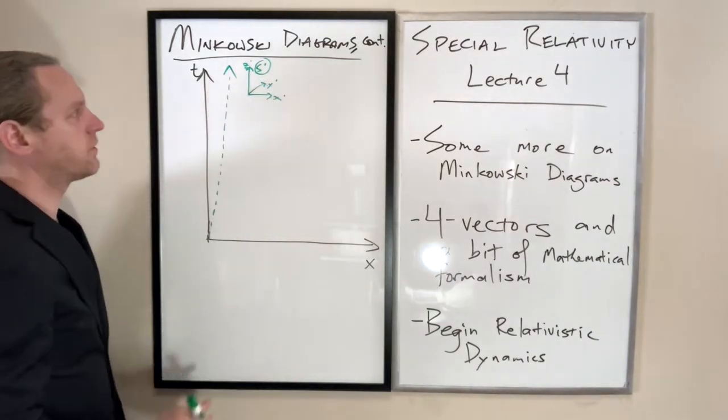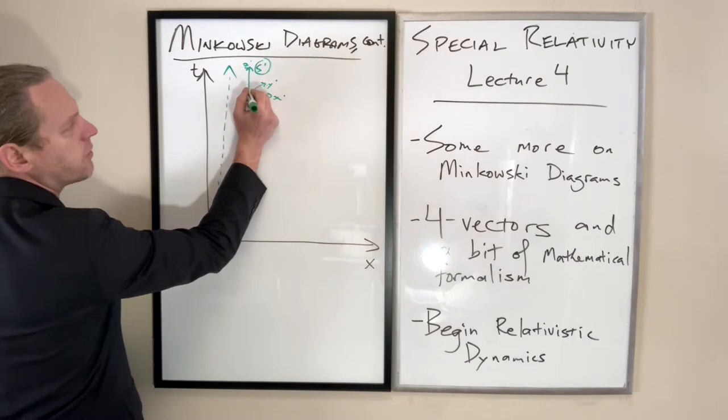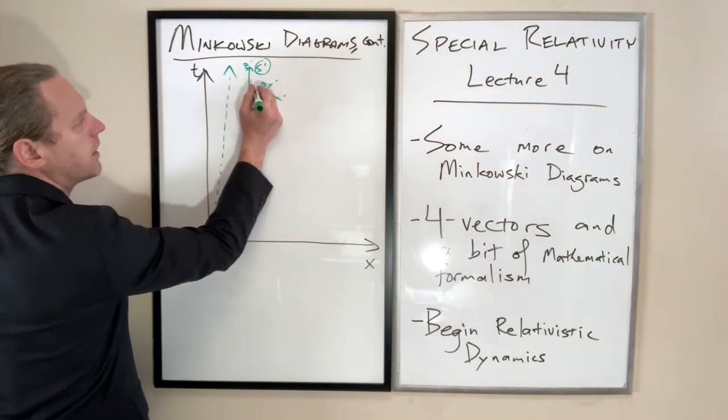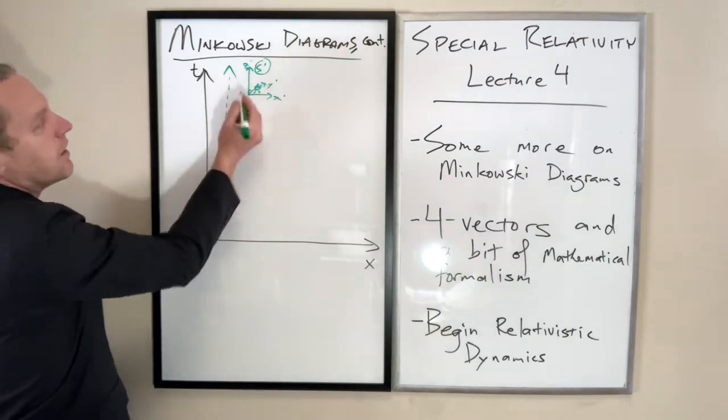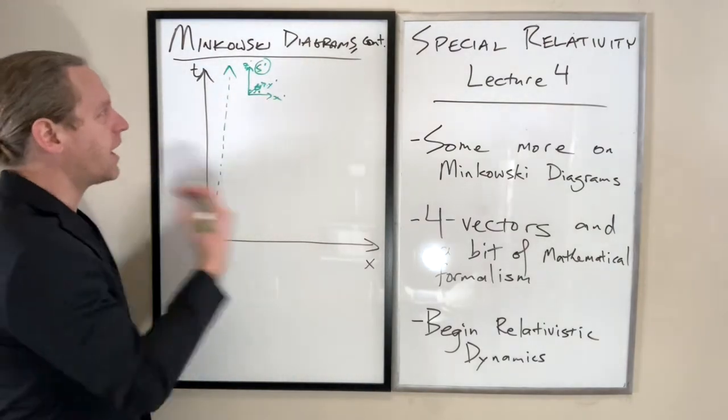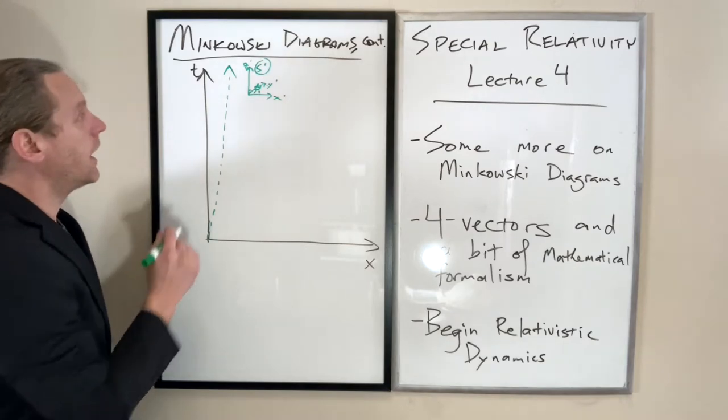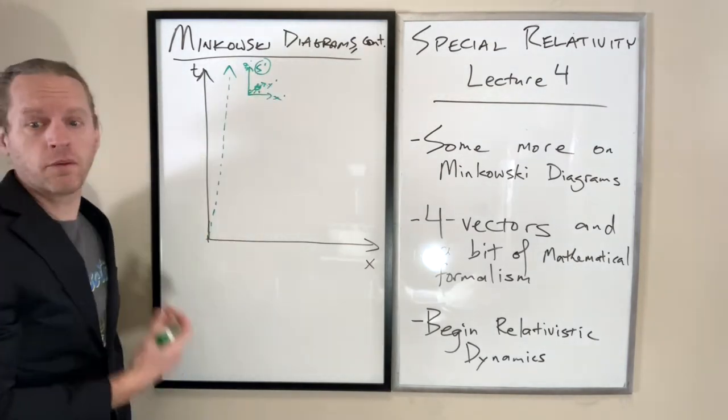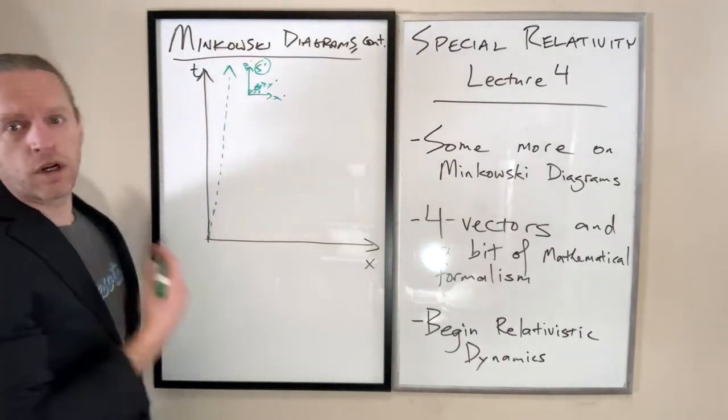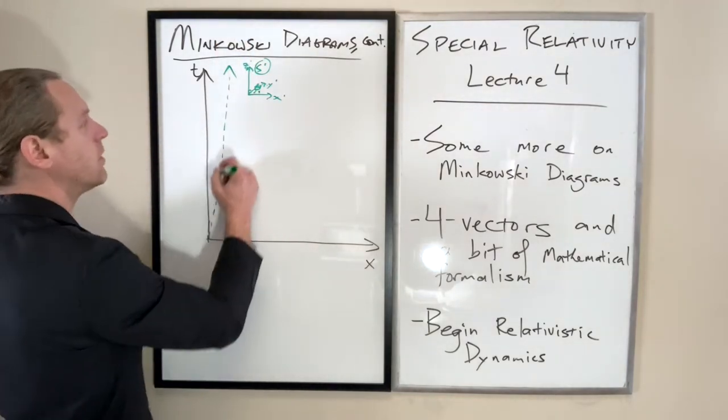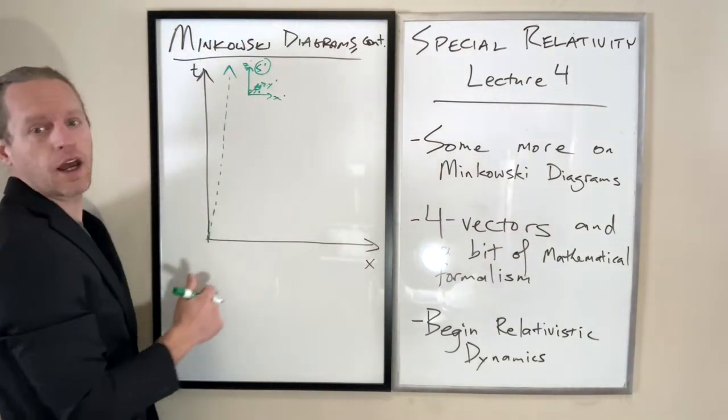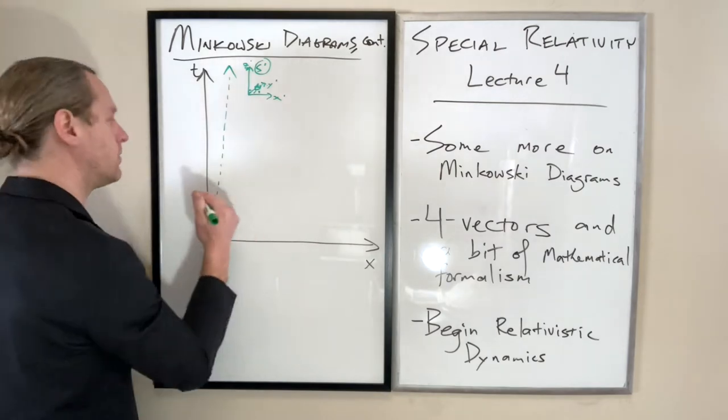If you were some little hobbit standing right there with a hobbit-sized clock, you would see that clock remaining at rest at all times. Specifically, this world line would trace out the exact path of the origin at all times delta t prime.